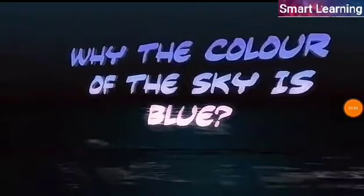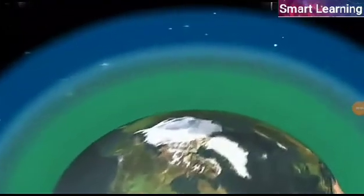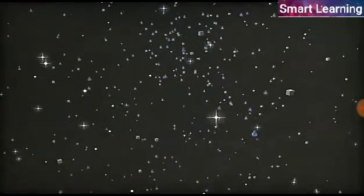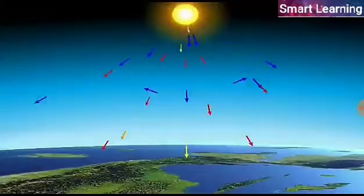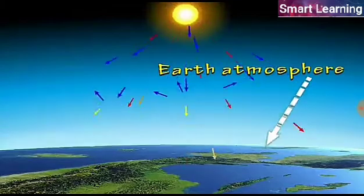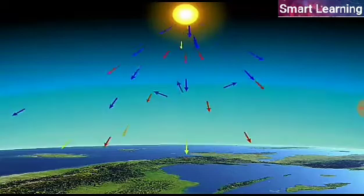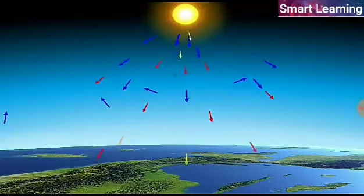Why is the color of the sky blue? As the molecules of air and other fine particles in the atmosphere have size smaller than the wavelength of visible light, when sunlight passes through the atmosphere, the fine particles in the air scatter the blue color more strongly. The scattered blue light enters our eyes. That is why a clear sky looks blue.